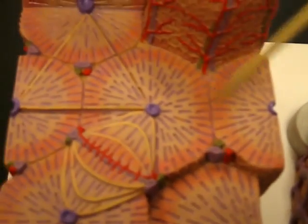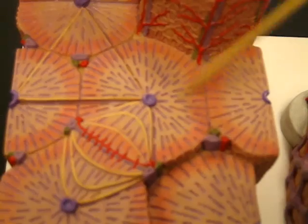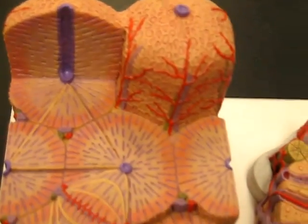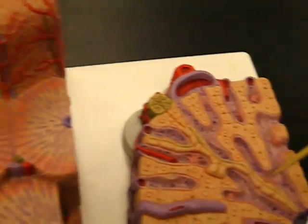This over here is a hepatic lobule, these circular structures. Over here is a cross-section of the lobules.